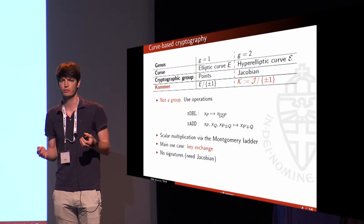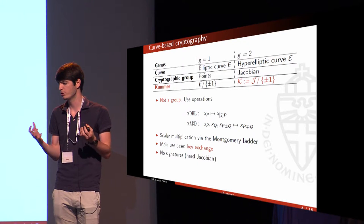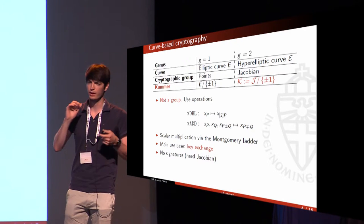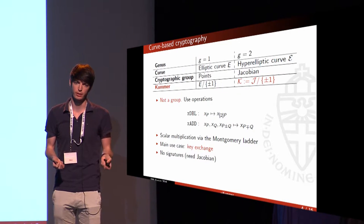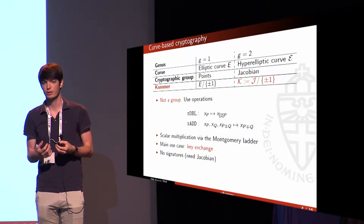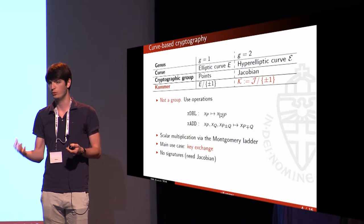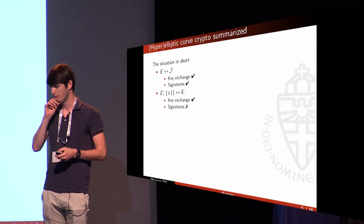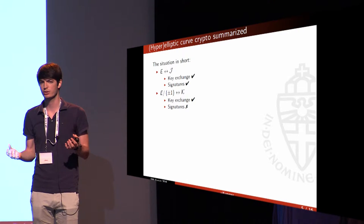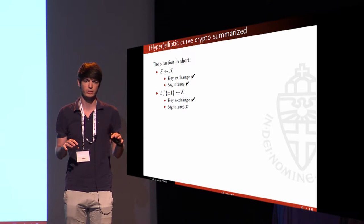The Kummer case is really close to that. Instead of working with points, we now work with Jacobian elements, and we can do the same thing — identify elements with their inverses. Again we destroy the group structure, but we are still left with X-double and X-add operations, which allows scalar multiplication and therefore key exchange. So key exchange on Kummer surfaces is easy, but by destroying the group structure, we lose the ability to do signatures using Kummer surfaces.